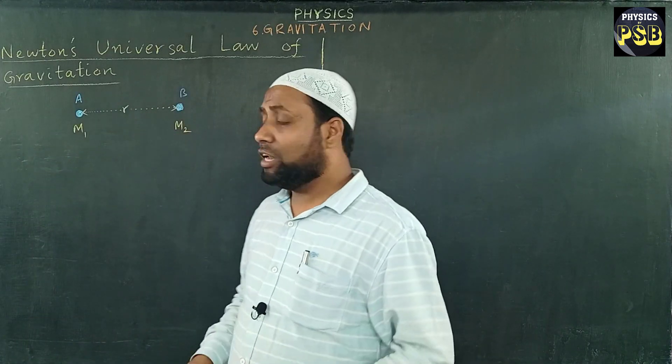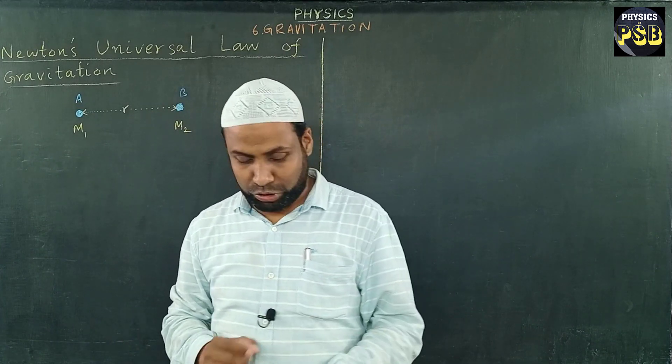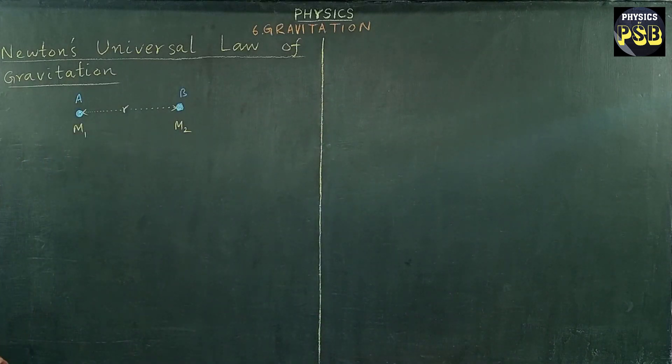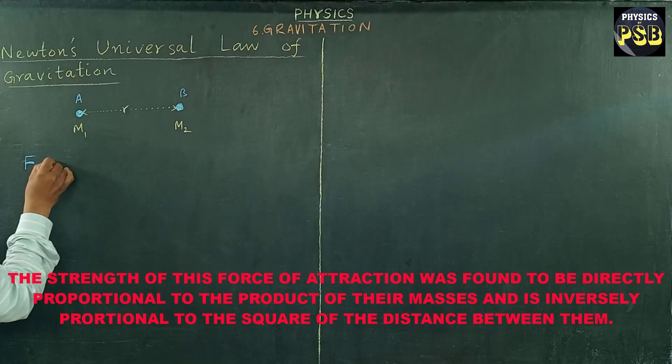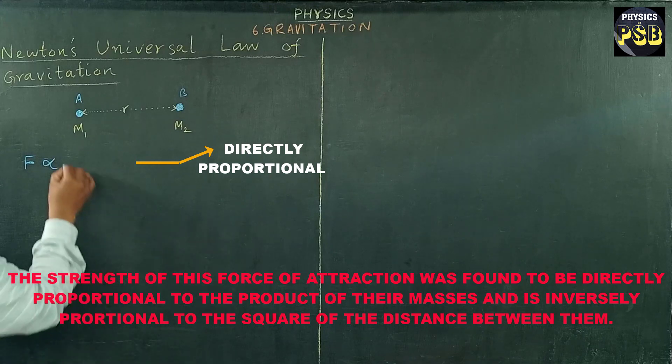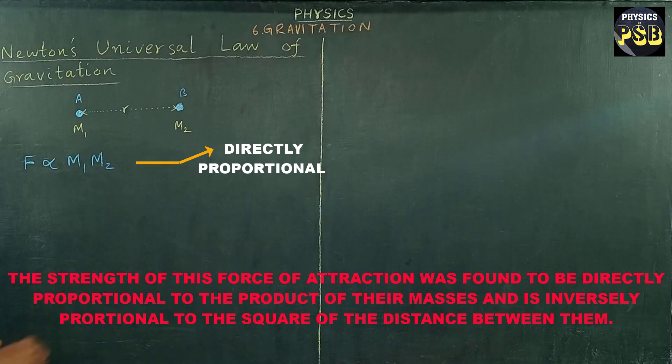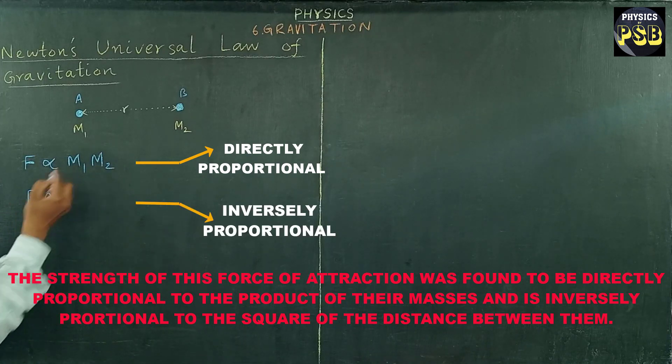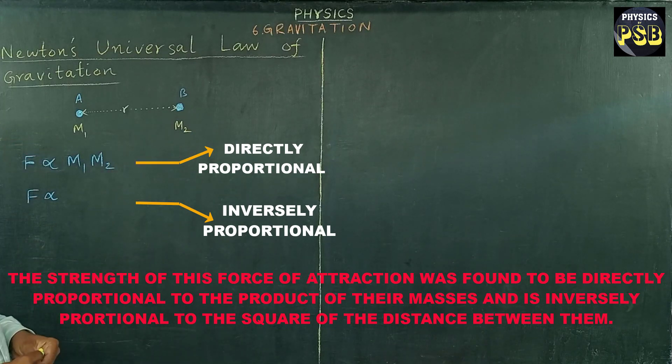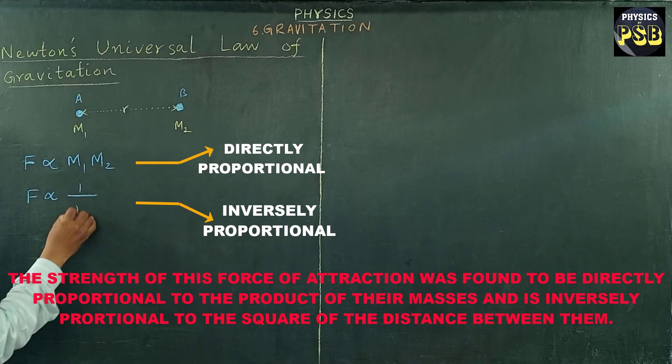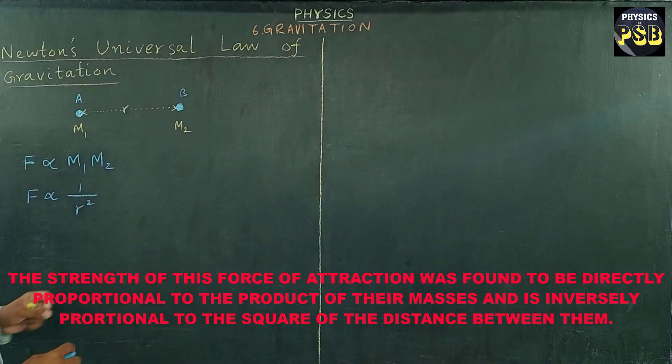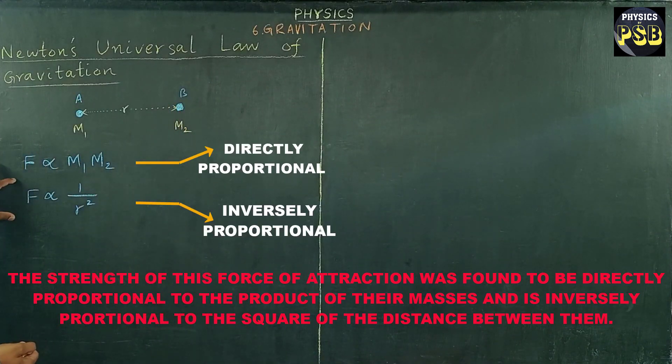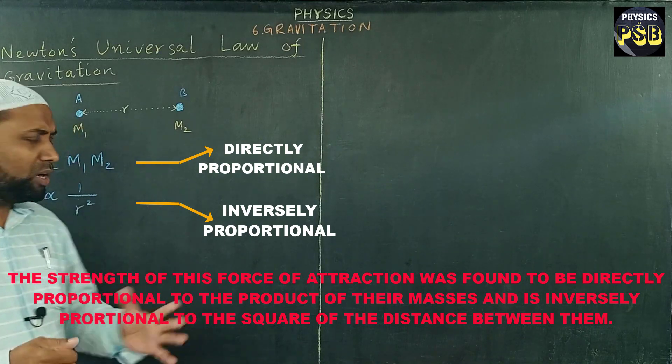According to Sir Isaac Newton, every object in the universe attracts another object with a force of attraction. I represent this force of attraction by letter F. According to Sir Isaac Newton, this force of attraction is found to be directly proportional to the product of these masses, that is m1 into m2, and it is found to be inversely proportional to the square of distance between these masses.